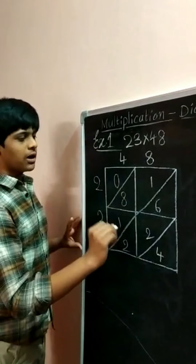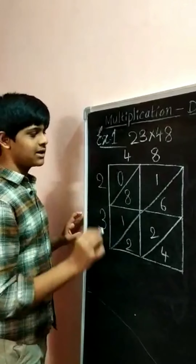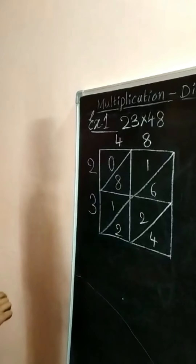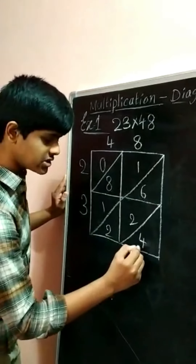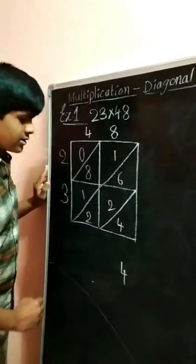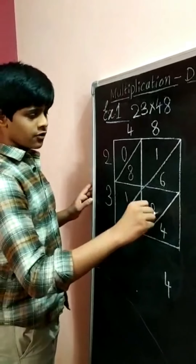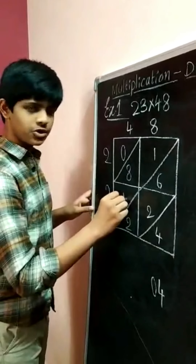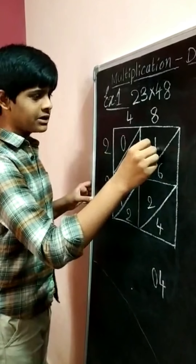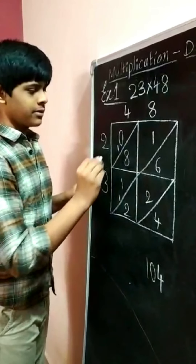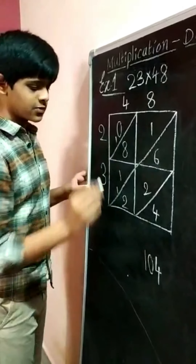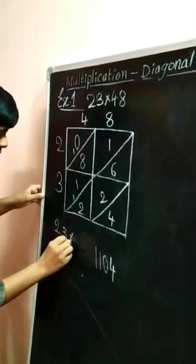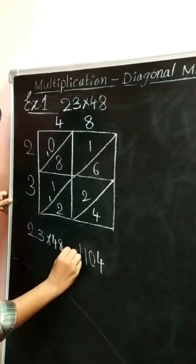In the second diagonal, 2, 2 and 6 are there. In the third diagonal, 1, 8 and 1 are there. In the fourth diagonal, only 0 is there. Adding: in the first diagonal, write 4. In the second diagonal, 2+2=4, 4+6=10; write 0 and carry 1 forward. 1+1=2, 2+8=10, 10+1=11; write 1 and carry 1. 0+1=1. So the product of 23 and 48 is 1104.